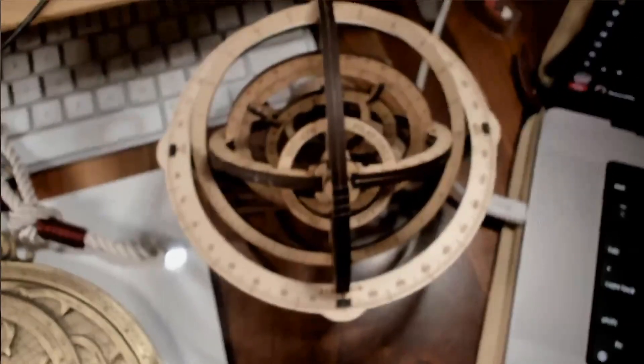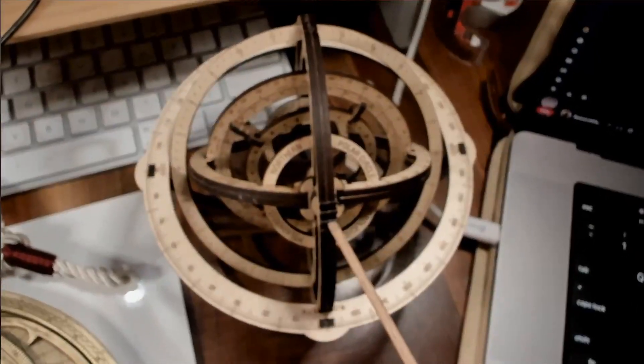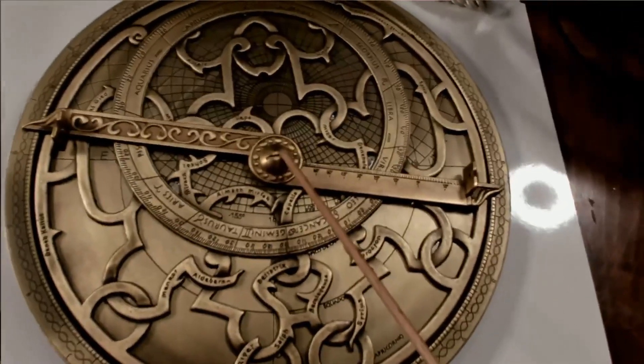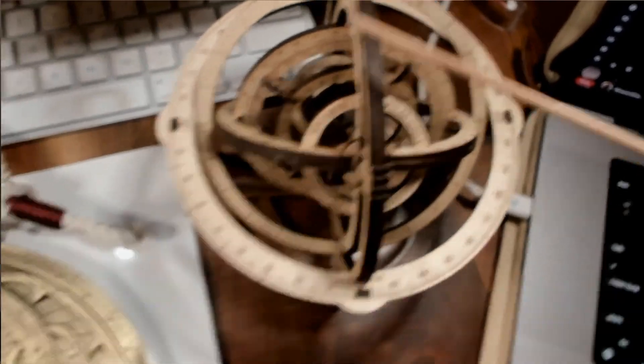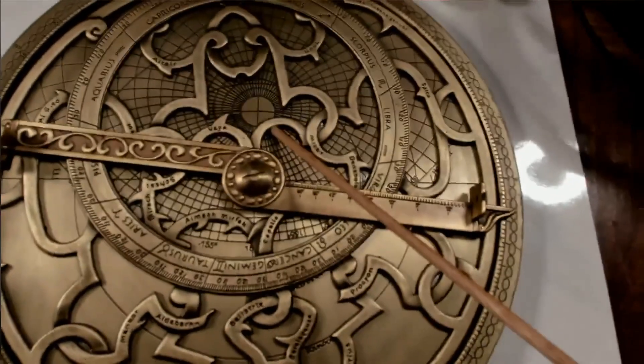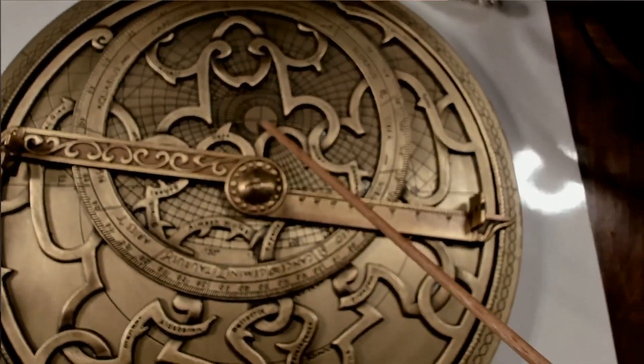So basically, if you look at it, you can kind of see how it's set up. So here is the north star on the armillary sphere. That's the north star on the astrolabe. Here is the zenith on the armillary sphere, and there is the zenith on the astrolabe.